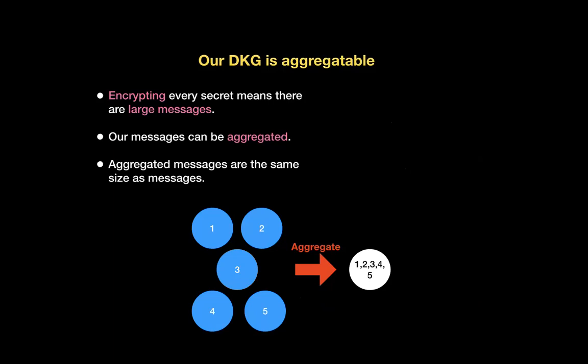When encrypting every single message sent from every party to every other party, the immediate consequence is that we would get something quadratic in size — we'd end up needing to send N² messages. To avoid this, we use the fact that our DKG is aggregatable. We can combine all transcripts from party one to all other parties into a single transcript that is the same size as any individual transcript, essentially compressing down that information.